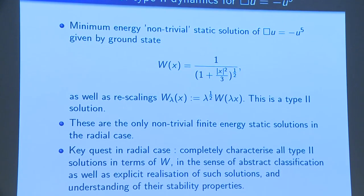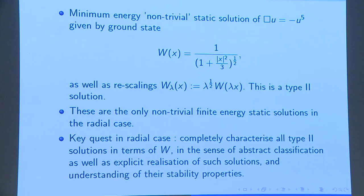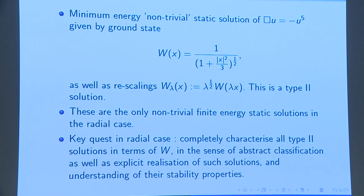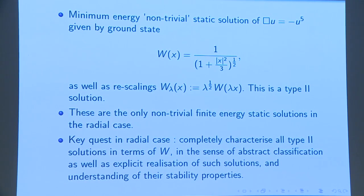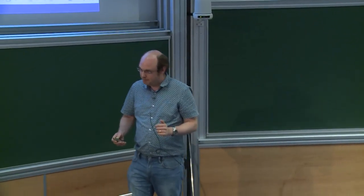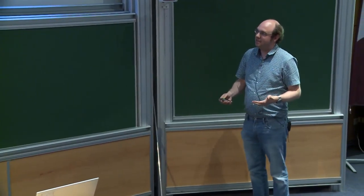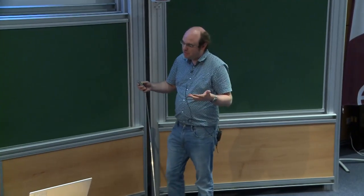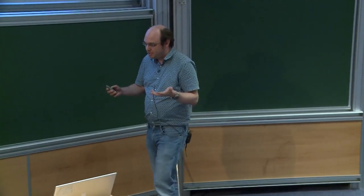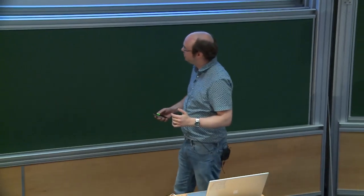What is the key quest? On the one hand, you want to completely characterize all type 2 solutions in an abstract fashion by working in the energy space, and you get these beautiful soliton resolution pictures of Kenig and Merle. But I would like to add some other things — namely, can you actually give me solutions that do what's being described in the soliton resolution?